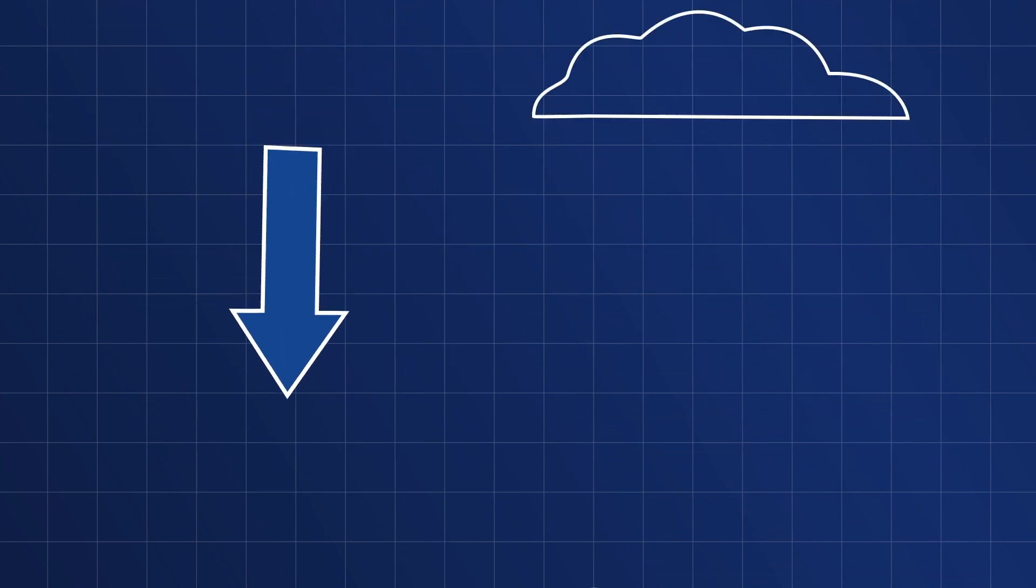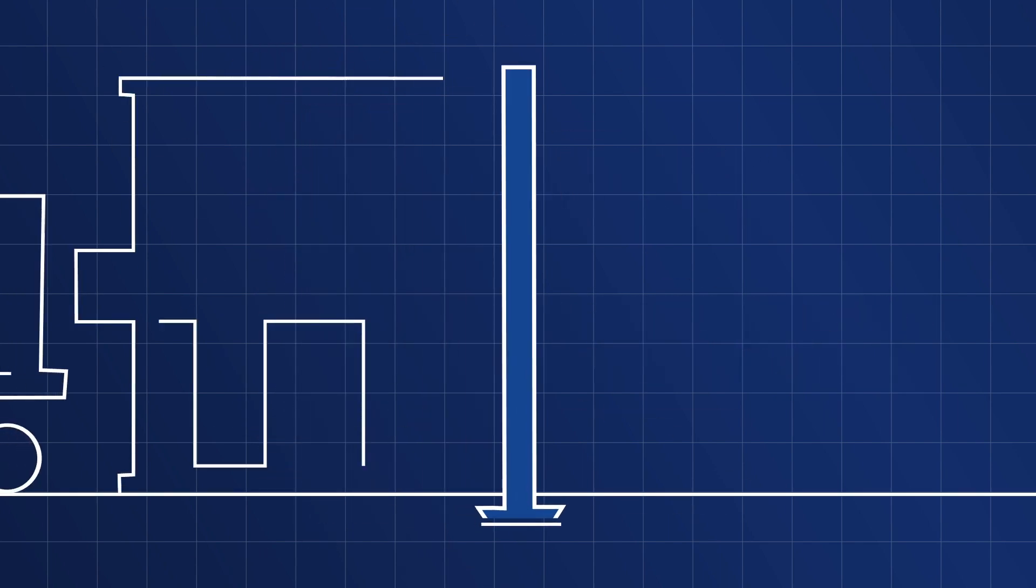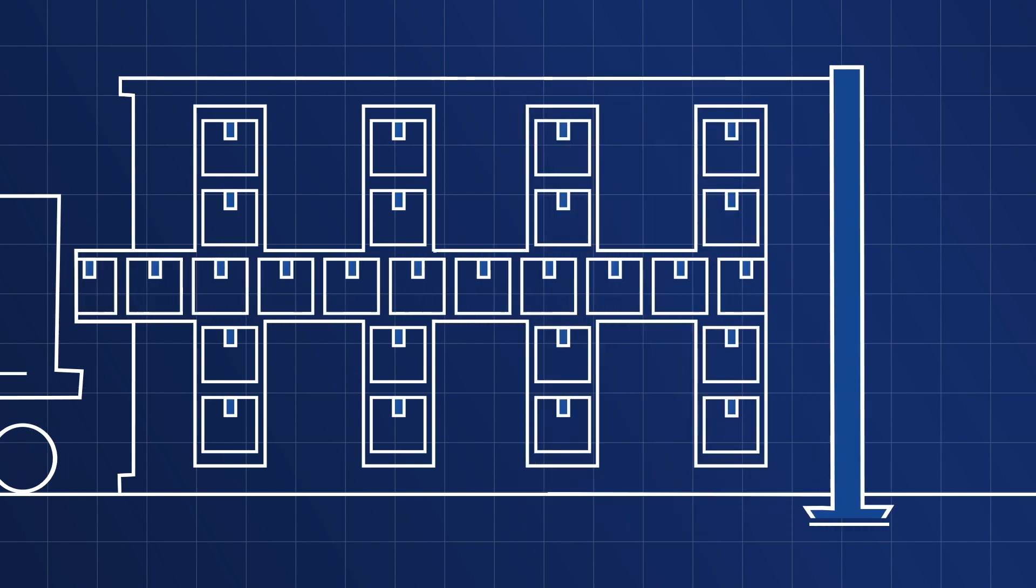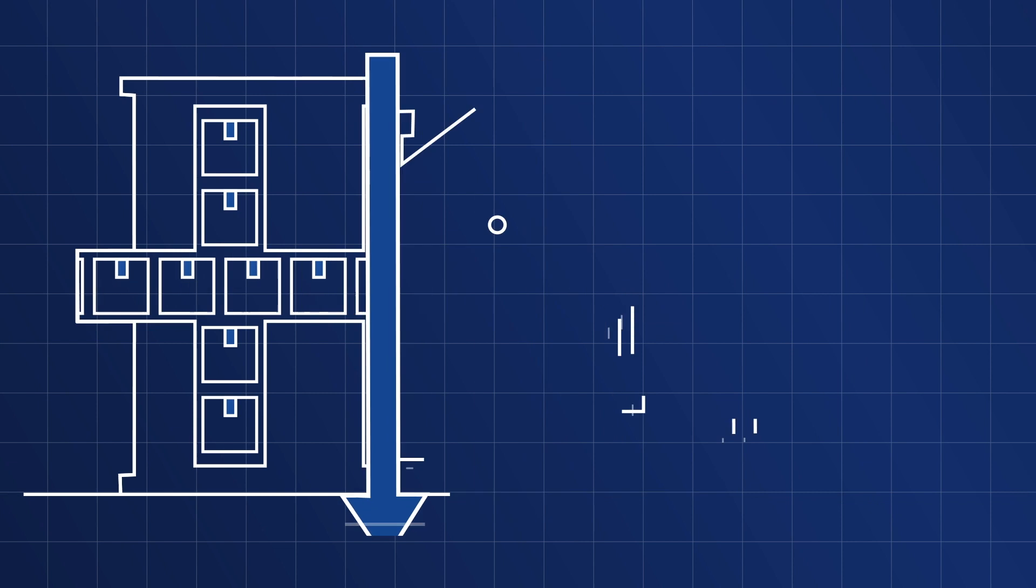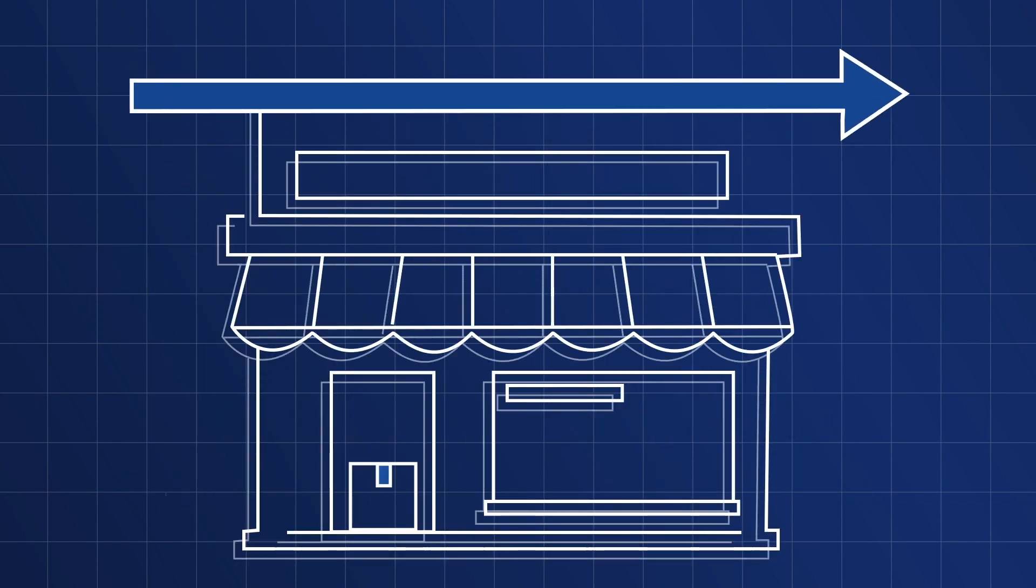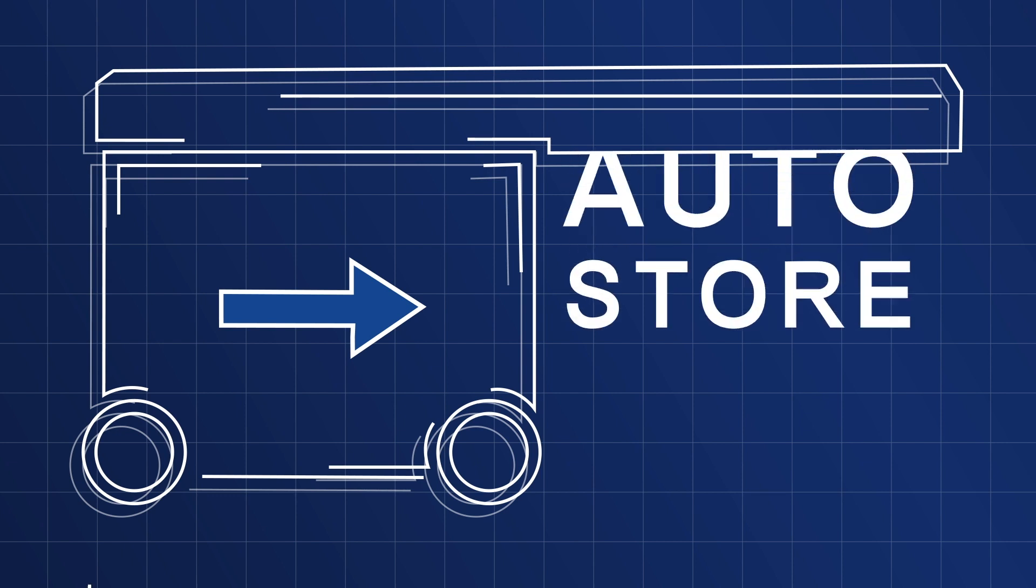Micro-fulfillment can also be used for another similar strategy called dark stores. These are small fulfillment centers located in retail spaces that operate without customer interaction. From these dark stores, retailers can deliver to customers directly, deliver to local stores for customers to pick up, or have customers pick up orders curbside.